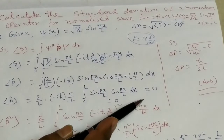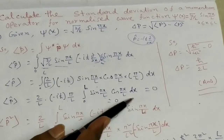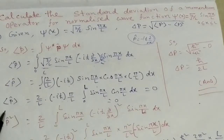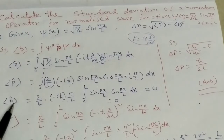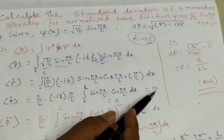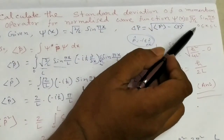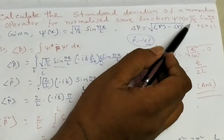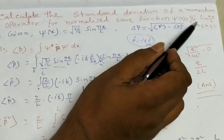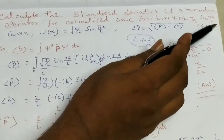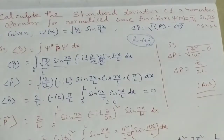So the average value of p is equal to zero for the wave function psi equals the square root of 2 over l times sine pi-x-over-l.